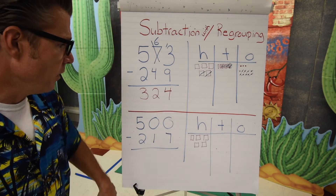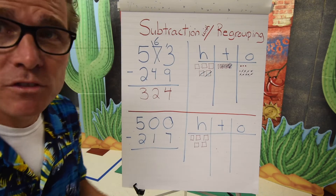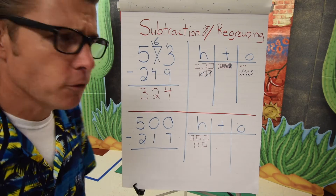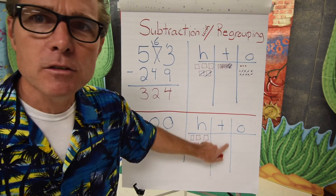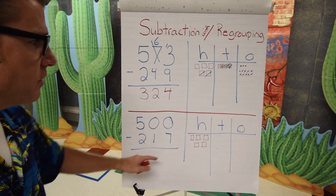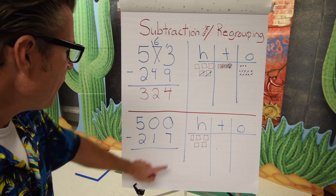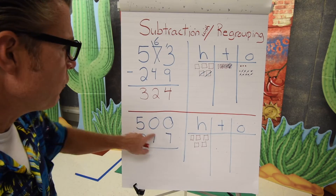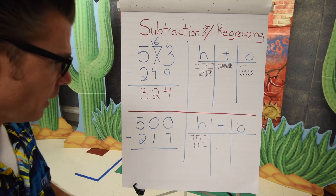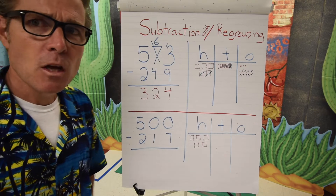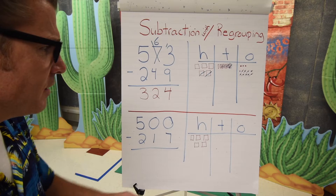We start in the ones place with zero and we're trying to take seven away from zero, which you can't do. Let's go over to the tens spot — but there's nothing to borrow in the tens spot; it's just as empty as the ones spot. However, we can go to the hundreds spot because there are five hundreds there.